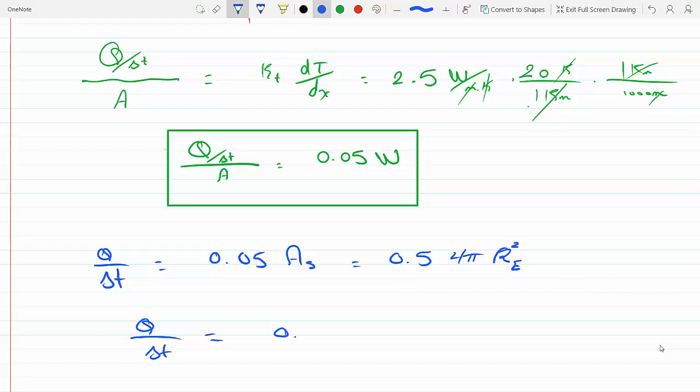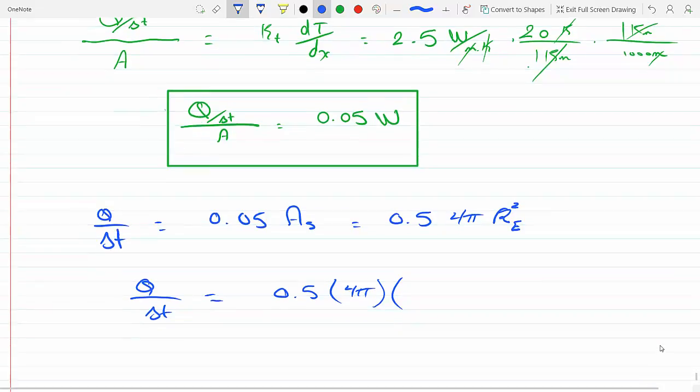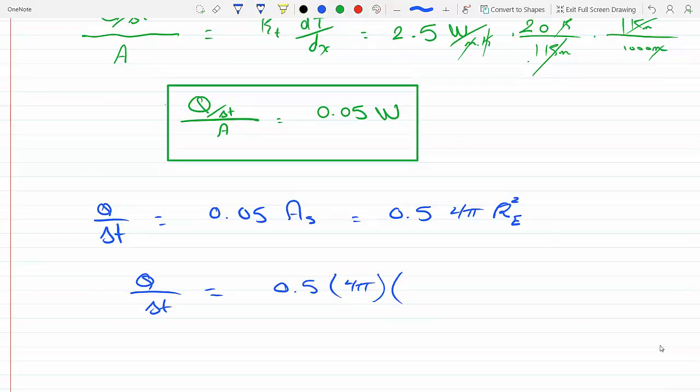So this would be 0.05 times 4 pi times the radius of the earth. Let me look that up really quick. I think it's around 6400 kilometers. Six thousand three hundred and seventy one kilometers. If I change it to meters, I multiply by 10 to the third.